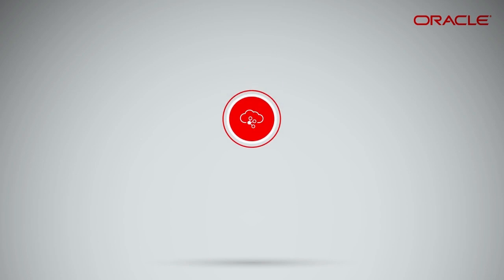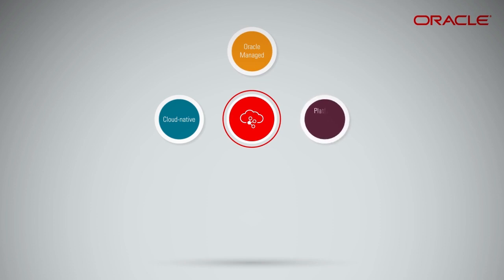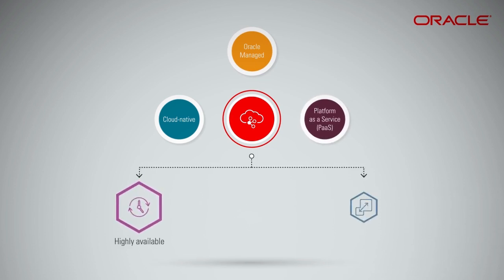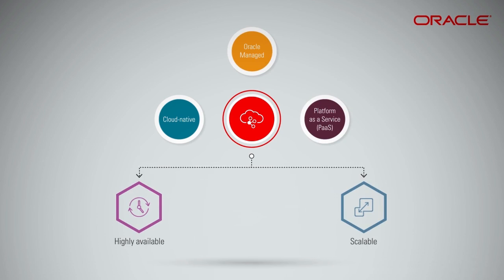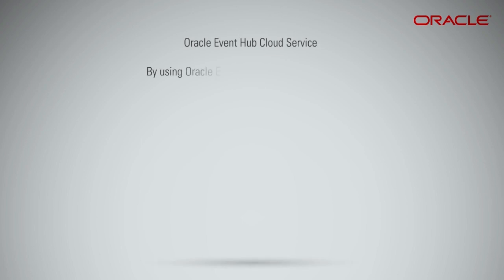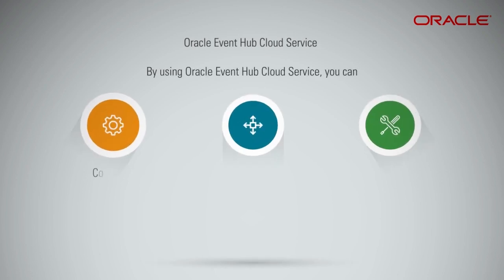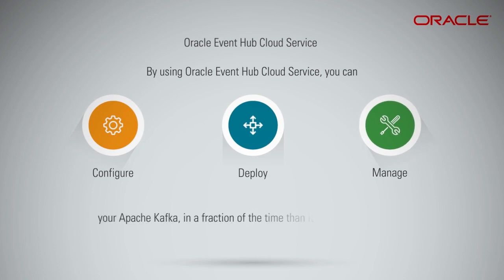The Oracle Event Hub Cloud Service is a cloud-native, Oracle-managed, platform-as-a-service offering that provides a highly available and scalable messaging platform for loading and analyzing streaming data. By using Oracle Event Hub Cloud Service, you can quickly configure, deploy, and manage your Apache Kafka in a fraction of the time than it would normally take.